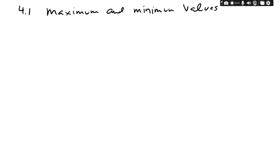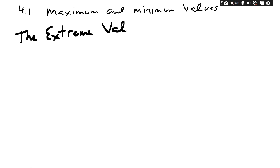Alright class, we are beginning chapter four about derivatives. We're going to take a long look at how derivatives affect graphs. Section 4.1 is about minimum and maximum values in graphs. First up, we have a little theorem called the Extreme Value Theorem.